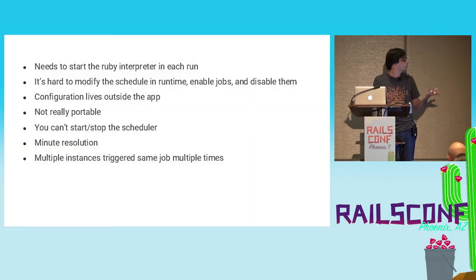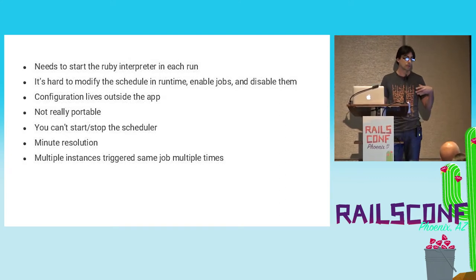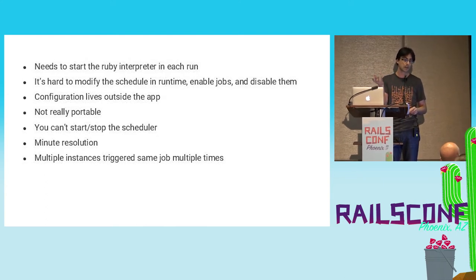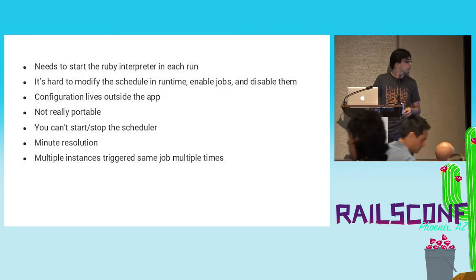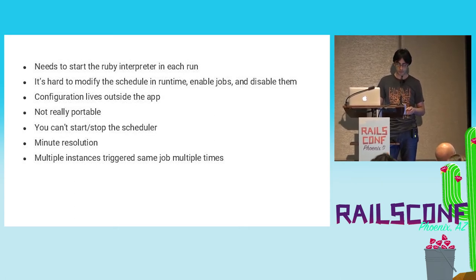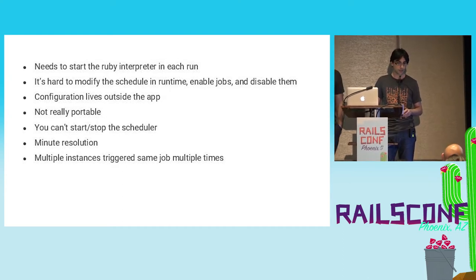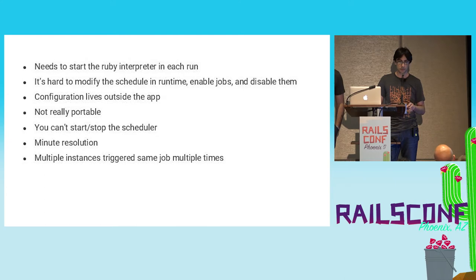So why not cron? Because it needs to start the Ruby interpreter on each run. We are using JRuby, and it takes some time to start up and consumes memory. There's no easy way to programmatically add, remove, enable, and disable cron entries. Cron's configuration needs to live outside of the app's configuration. It's not a portable solution because it relies on the operating system. Also, cron's minimum resolution is at the minute level, not seconds level. And deploying the app in a cluster will trigger duplicated tasks when in fact you need to run them only once.